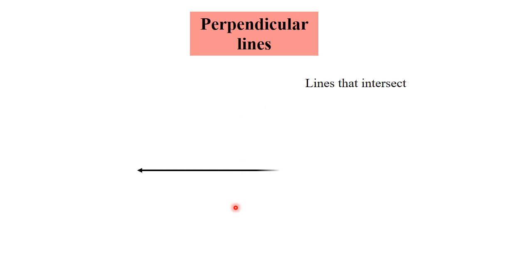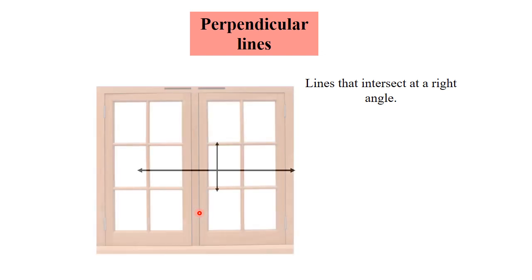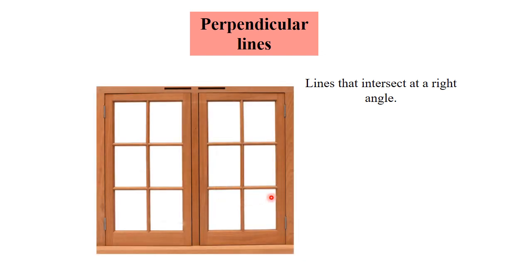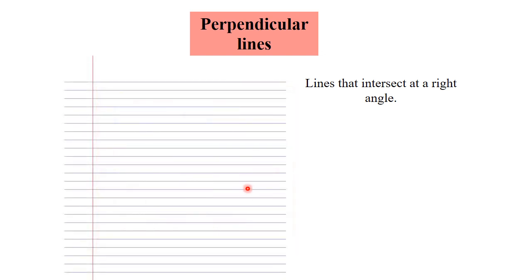Lines that intersect at a right angle and form four right angles are called perpendicular lines. We have the example of a window — you can see two lines intersecting. Also, on our page, the horizontal line and the margin make perpendicular lines.